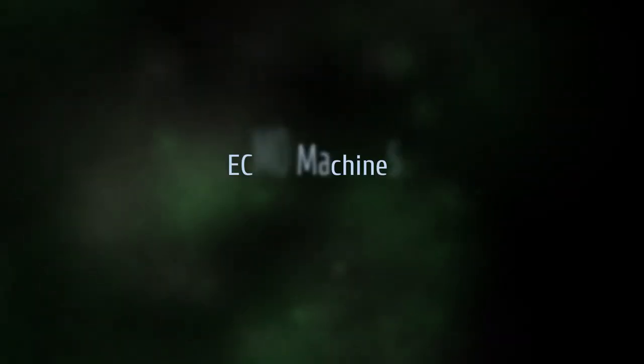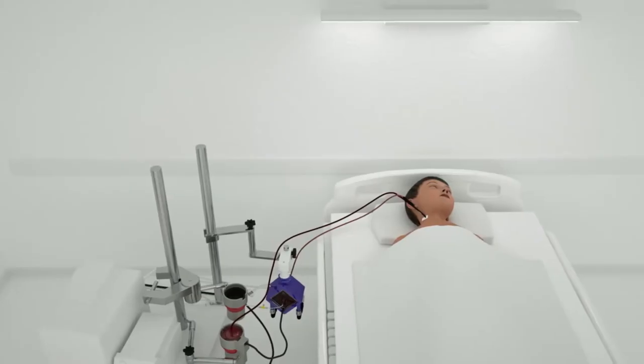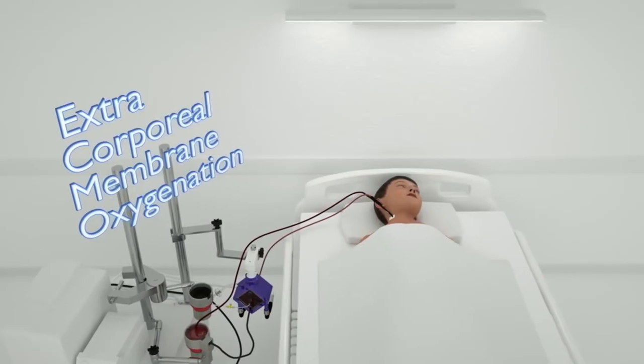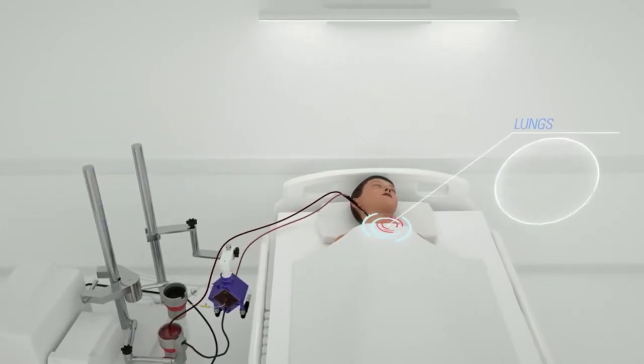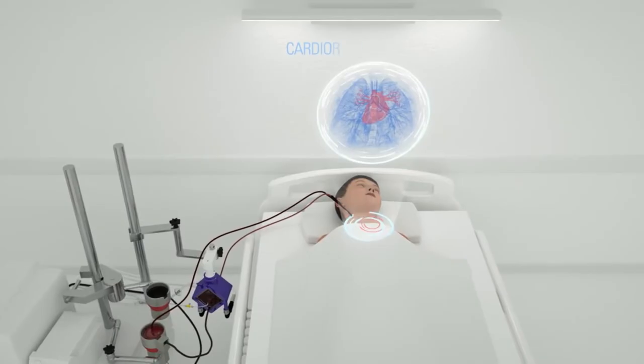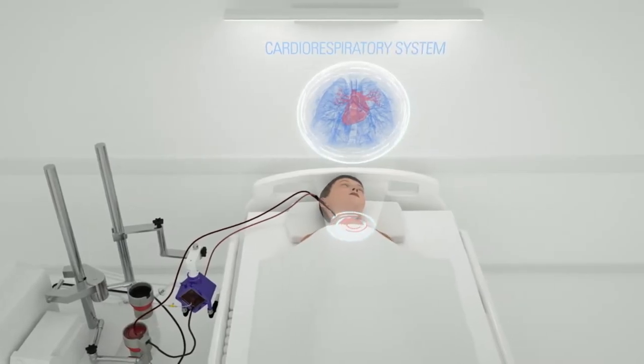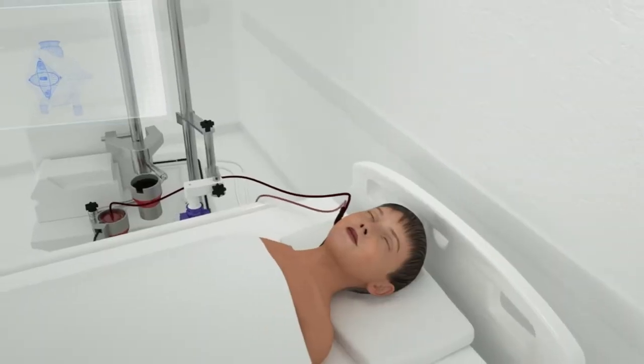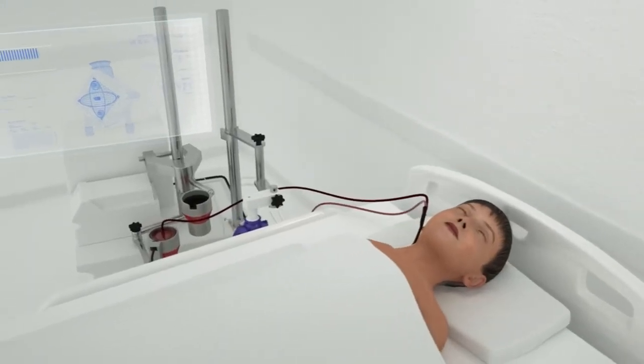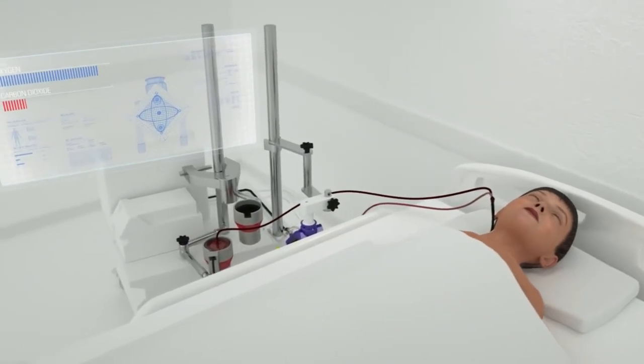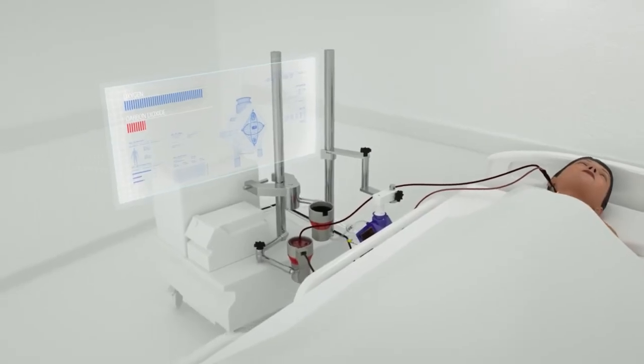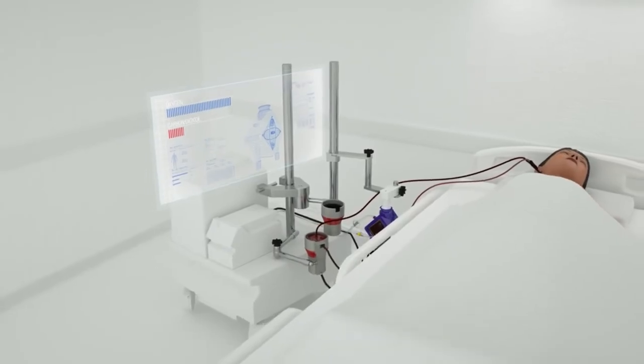Let's know about ECMO machines. ECMO stands for extracorporeal membrane oxygenation. The ECMO machine is similar to the heart-lung bypass machine used in open-heart surgery. It pumps and oxygenates a patient's blood outside the body, allowing the heart and lungs to rest. When you are connected to an ECMO, blood flows through tubing to an artificial lung in the machine that adds oxygen and takes out carbon dioxide. Then the blood is warmed to body temperature and pumped back into your body.